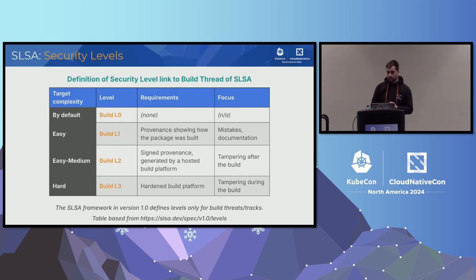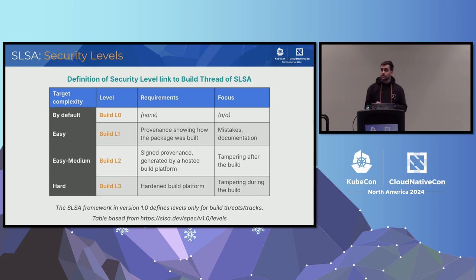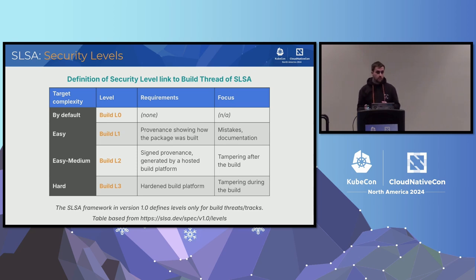Inside the SLSA framework, security levels are defined as milestones to reach, currently defined only on the build side. Level zero means you are doing nothing particular about supply chain security. Level one — the easy one to reach — is when you are generating a provenance file. A provenance file is in short a JSON file with some information about your build. It's easy to manipulate since it's just a file without any trust, but it's a good start for documentation.